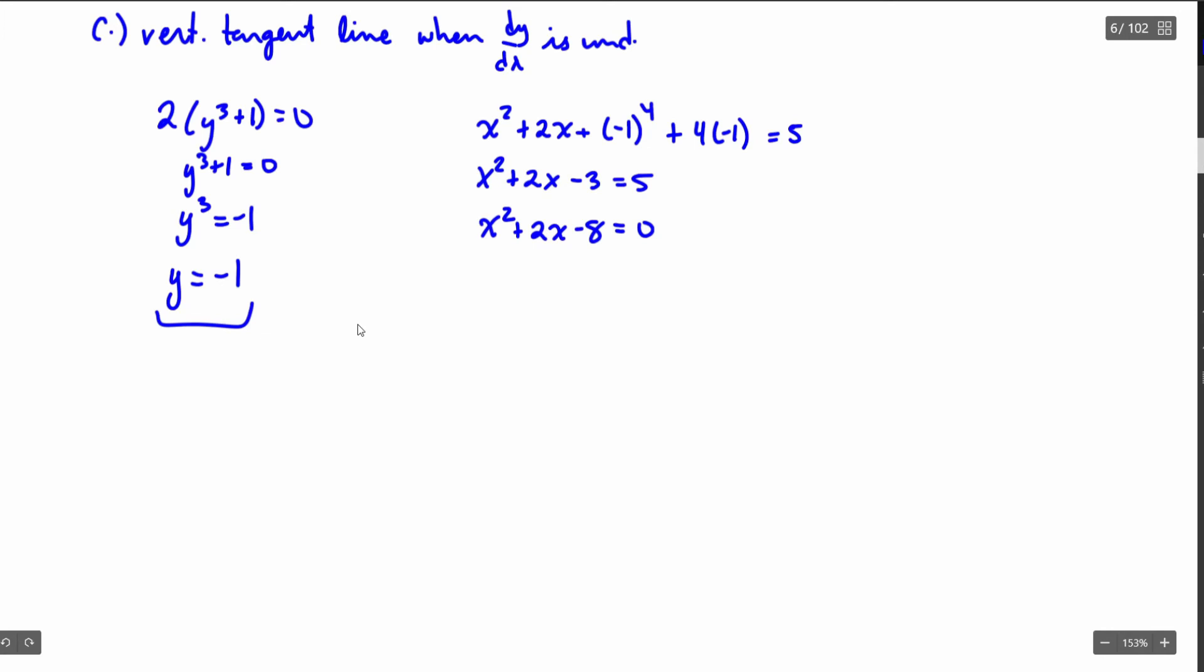So two values that multiply to be negative 8 that combine to be 2, so that's going to be x plus 4 and x minus 2. And I'm going to set both of those equal to zero and x minus 2 equals zero. And I'm going to solve for x here. So I'm going to get x equals negative 4 and x equals 2.